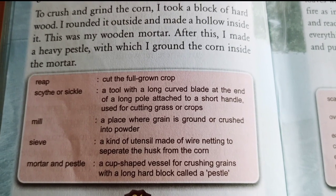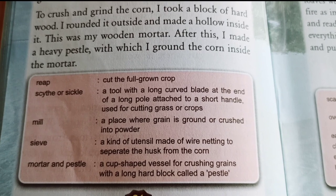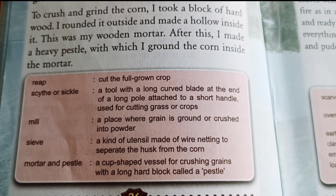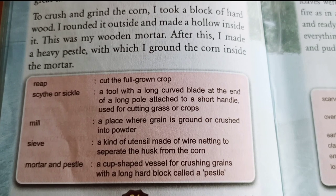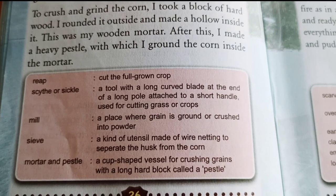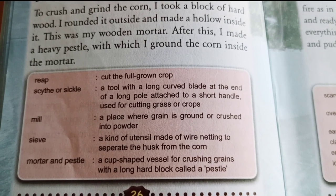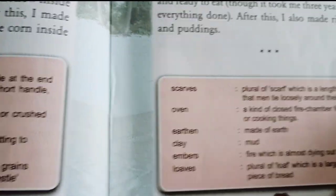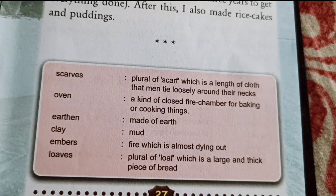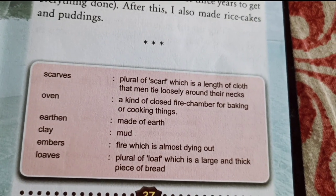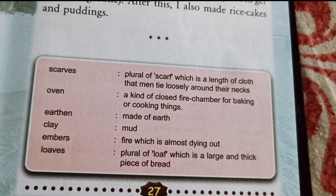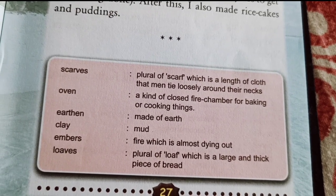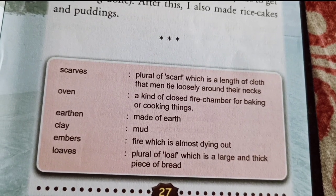Sieve: a kind of utensil made of wire knitting to separate the husk from the corn. Mortar and pestle: a cup-shaped vessel for crushing grains with a long hard block called a pestle. Scarves: plural of scarf, which is a length of cloth that men tie loosely around their necks.